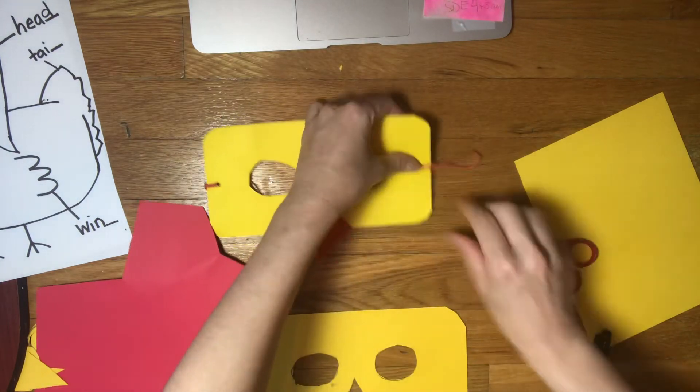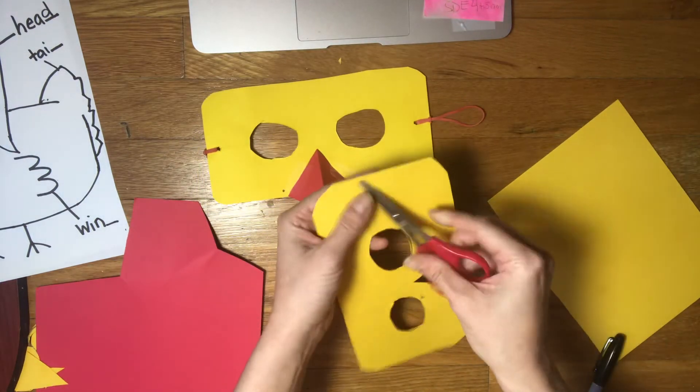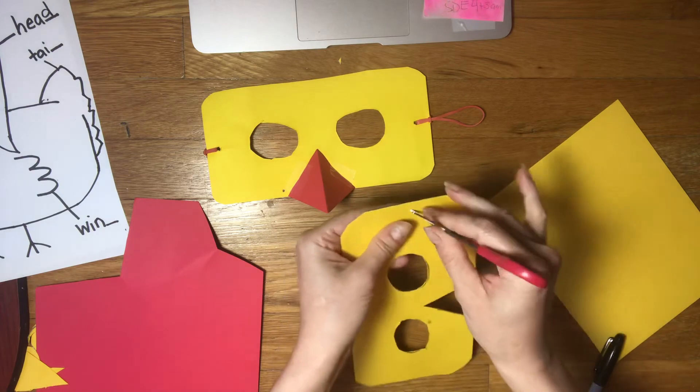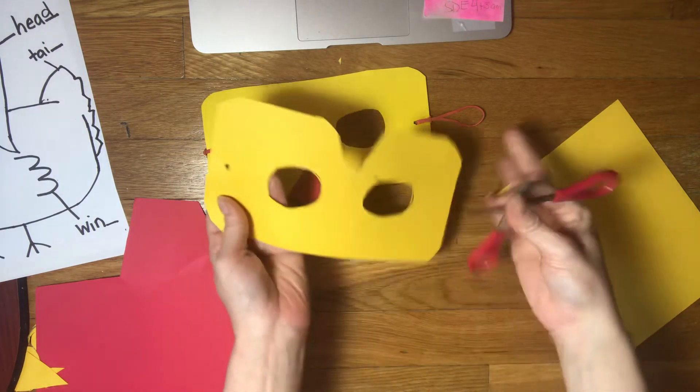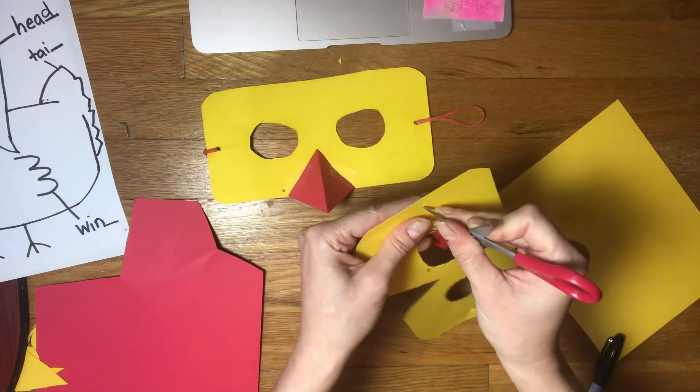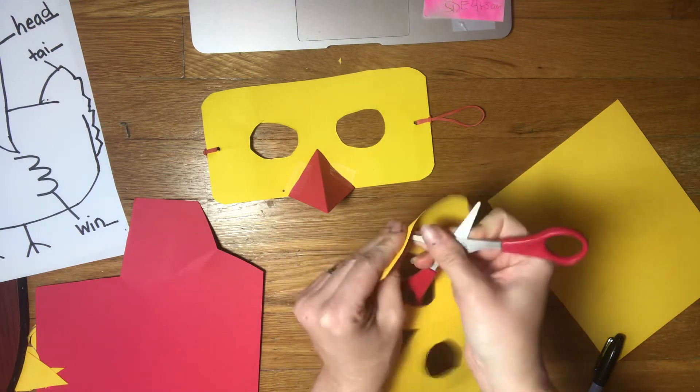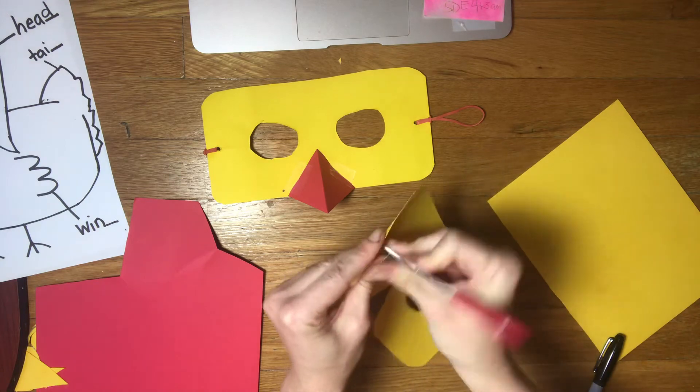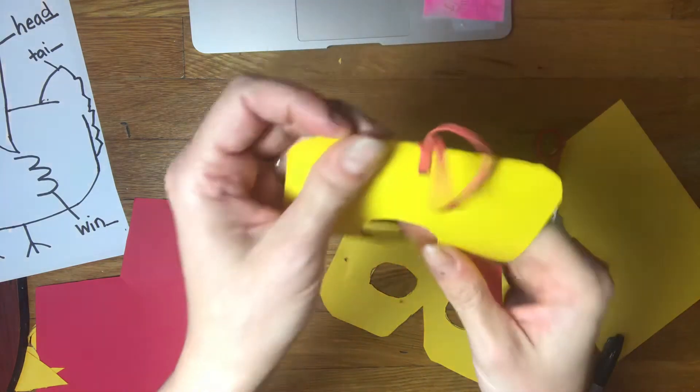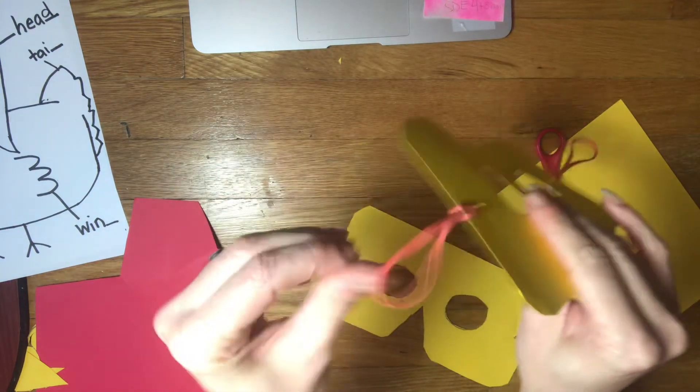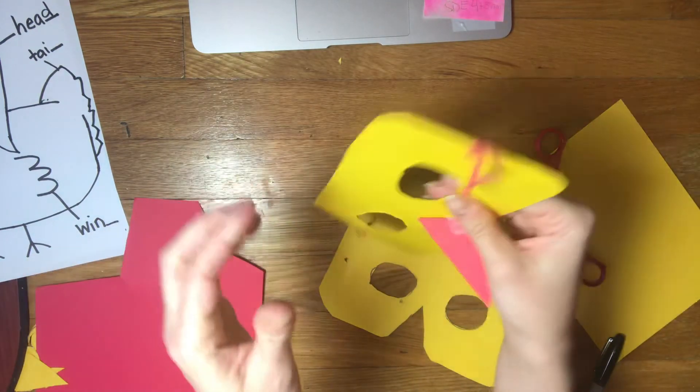Then what I did was I made two little holes for the rubber bands. One hole and another hole. And you just slide a rubber band and the rubber band goes behind your ear.